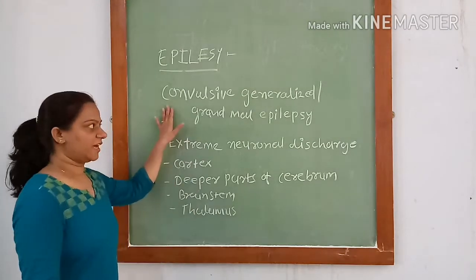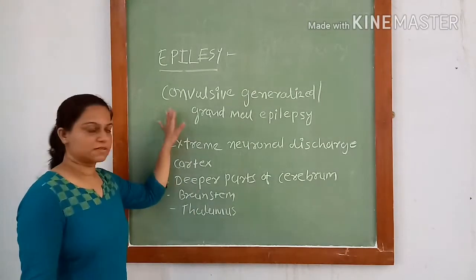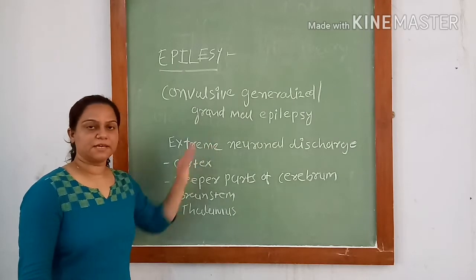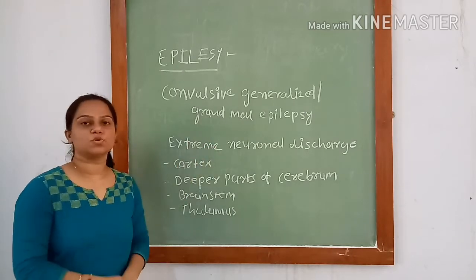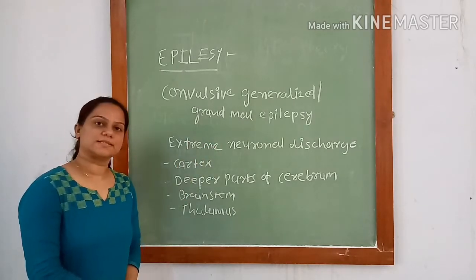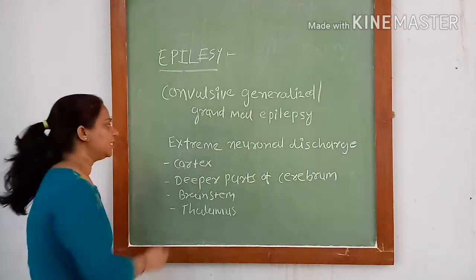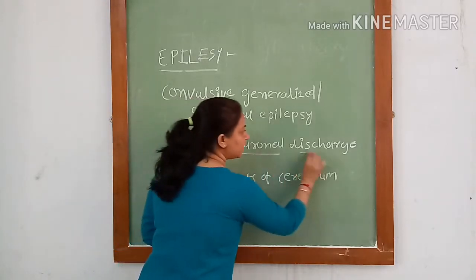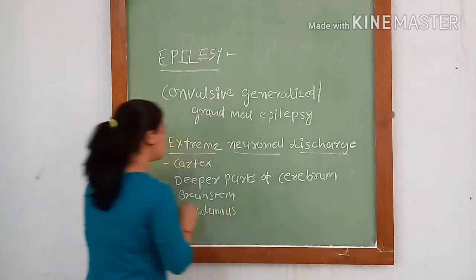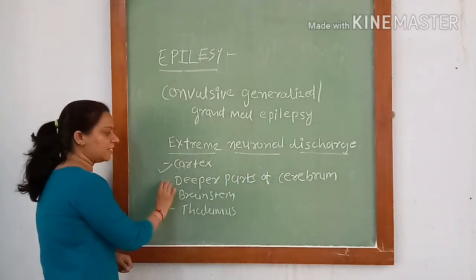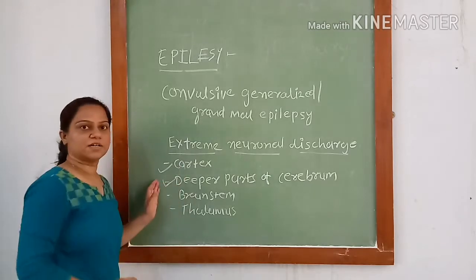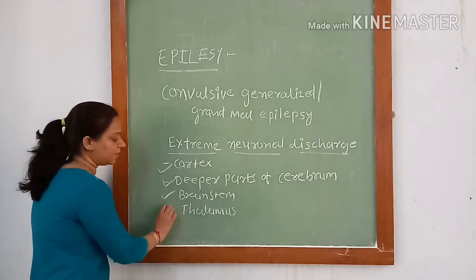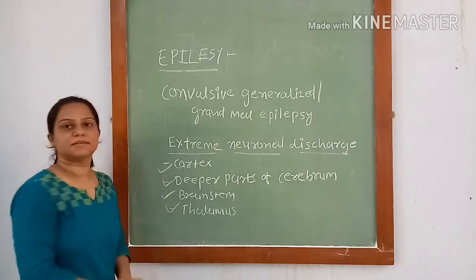Convulsive generalized seizures, also called grand mal epilepsy, are also known as tonic-clonic seizures. They are characterized by extreme neuronal discharge of the cortex, deeper parts of the cerebrum, brainstem, and thalamus.